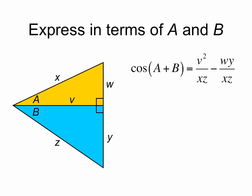Now we can express this in terms of a and b by some further simplifications. v squared over xz is equal to v over x times v over z. And wy over xz is equal to w over x times y over z.